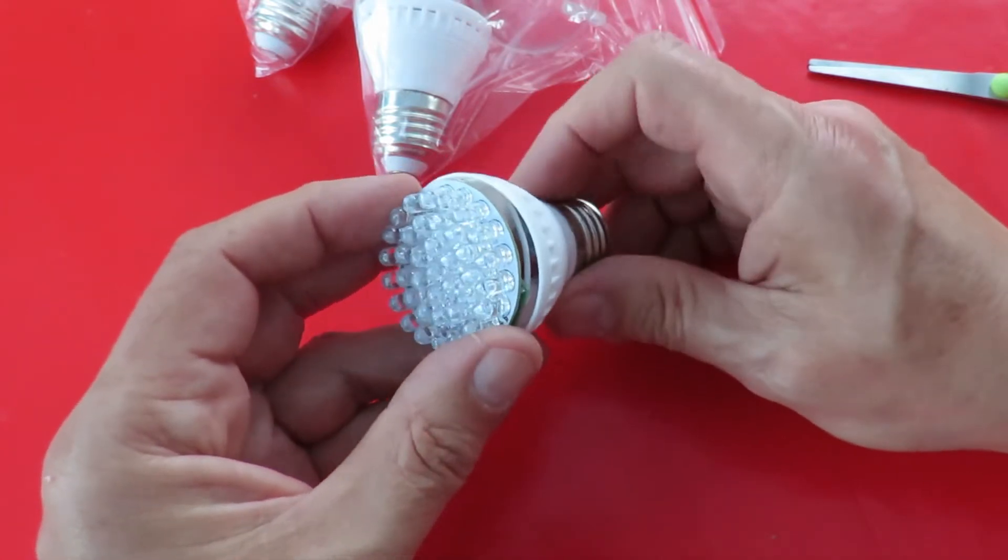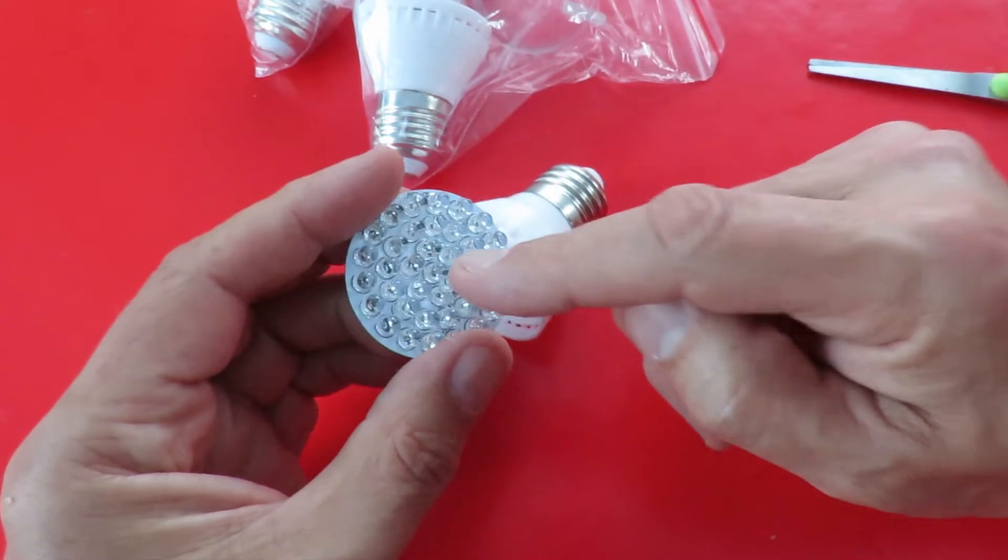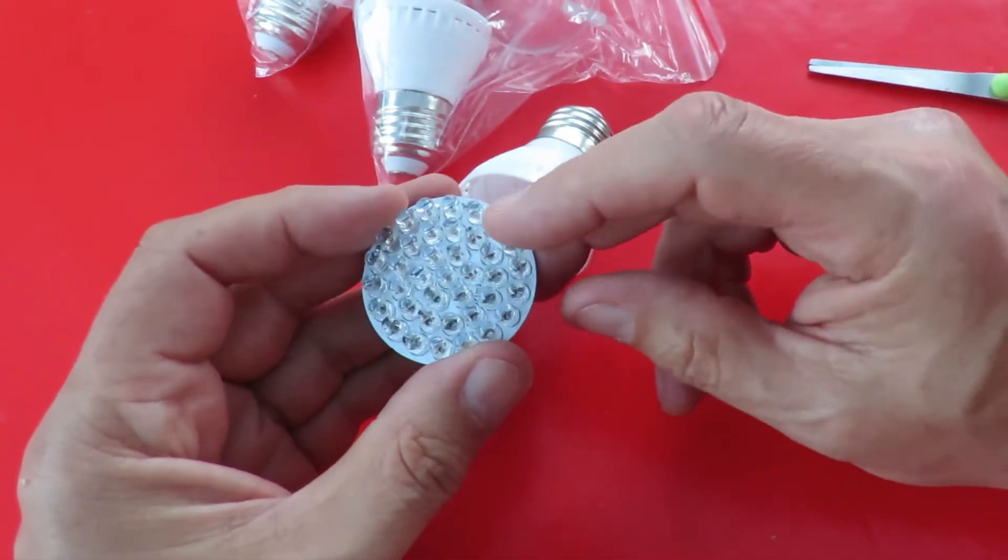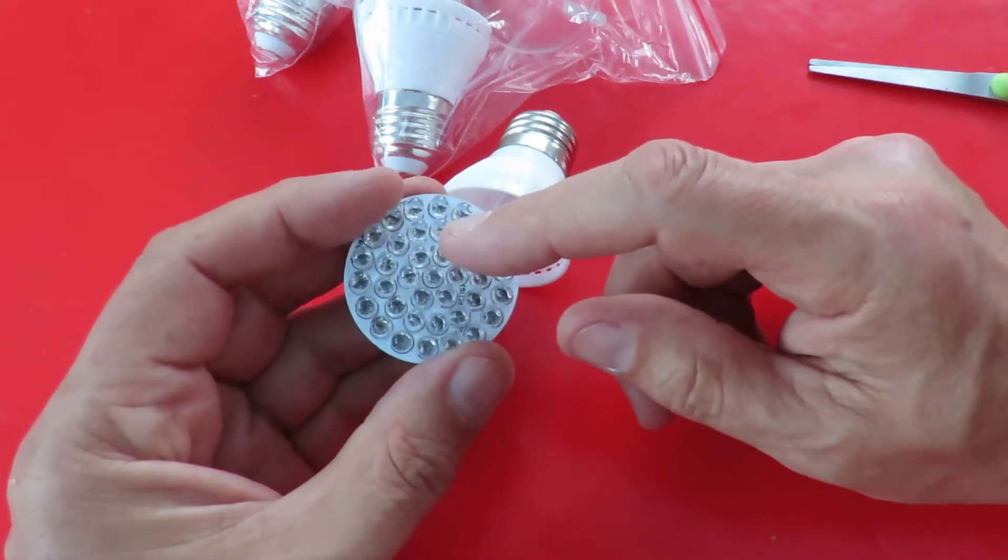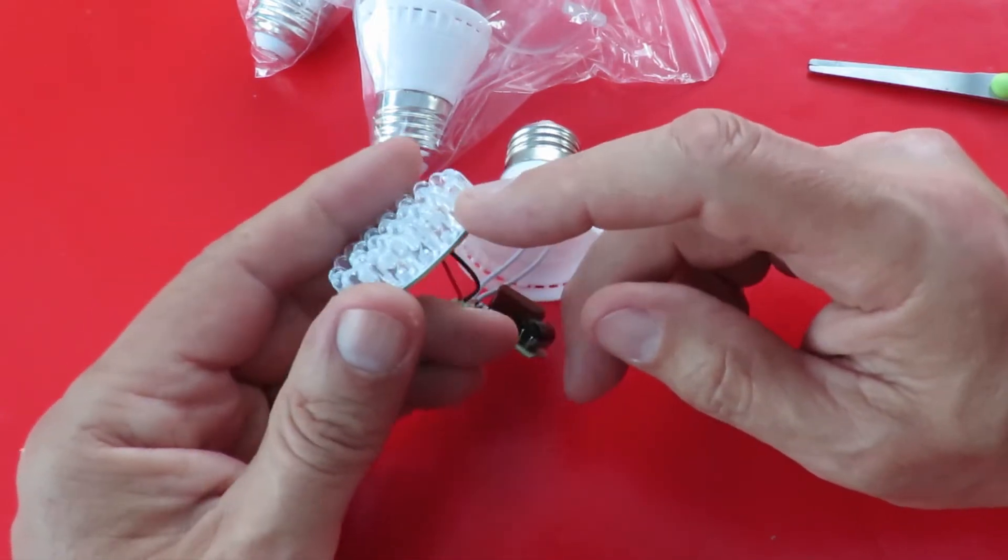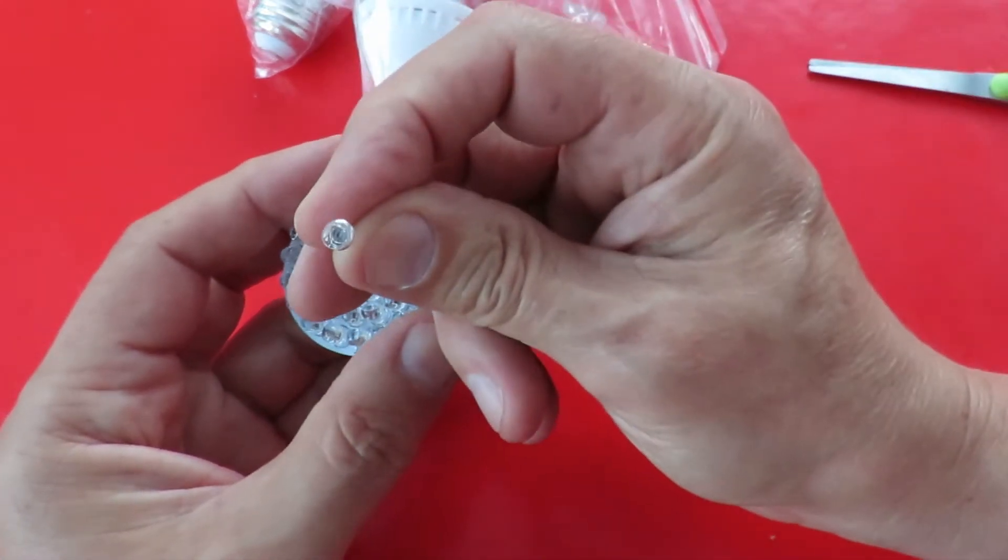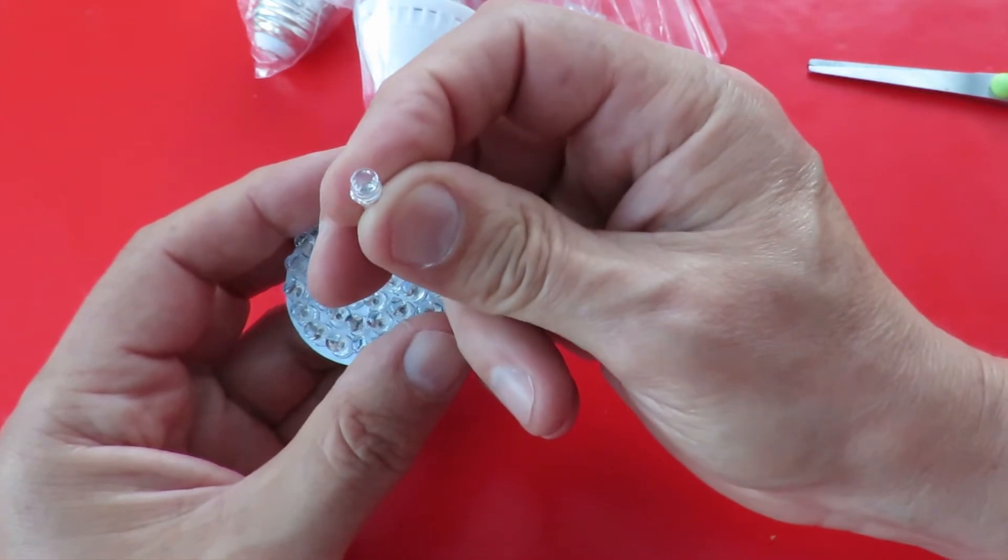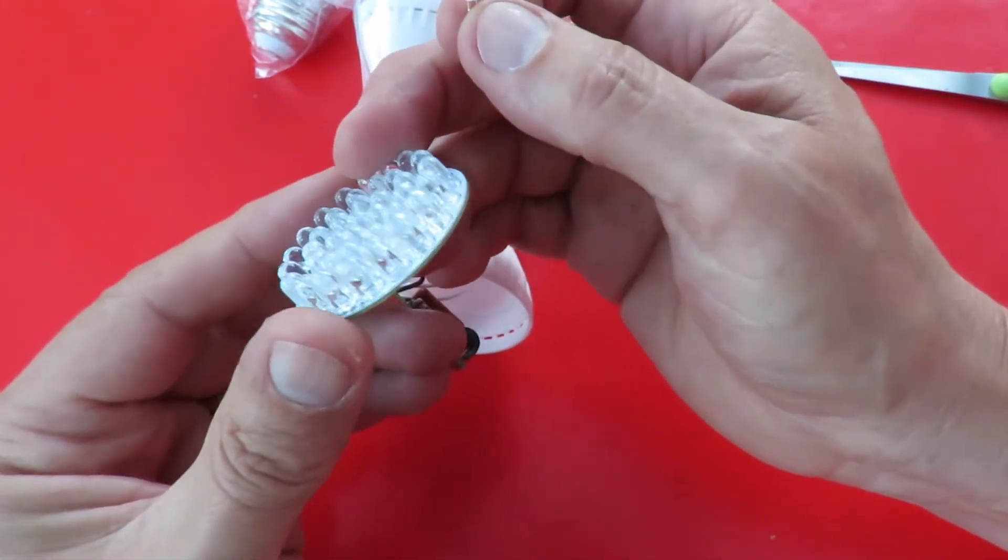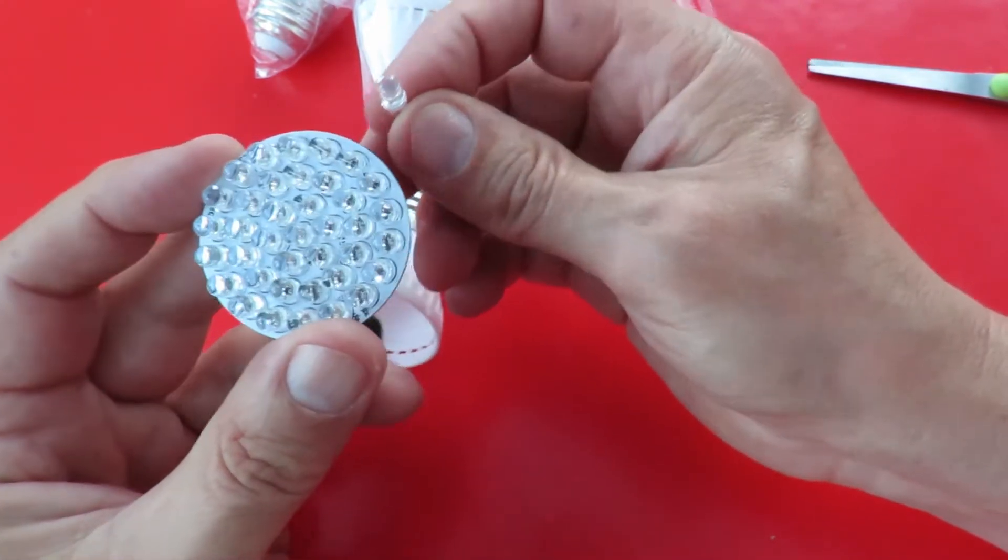But in the comments on the video, when people have looked at my video, they've said, well hang on a minute, infrared LEDs are only about 1.4 volts forward bias, whereas normal white LEDs are about 3 volts. So it could well be that I fried them all straight away, because they're getting twice as much voltage as they were expecting.